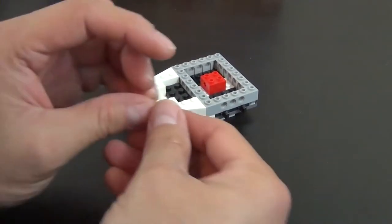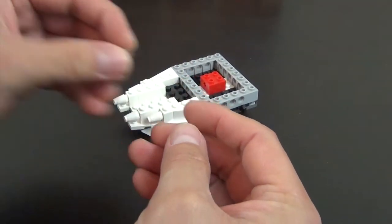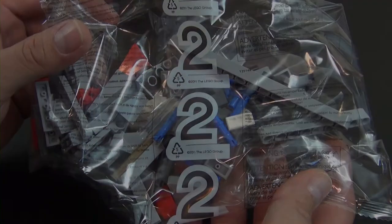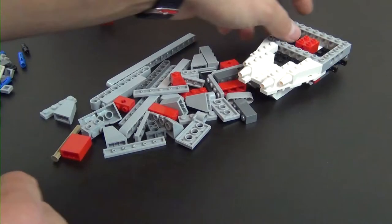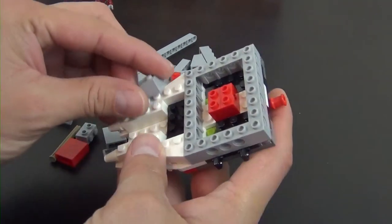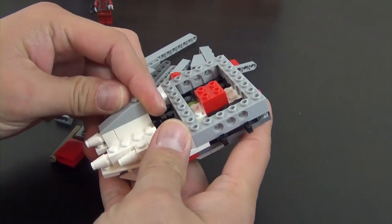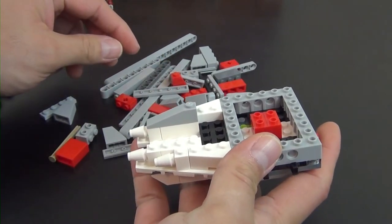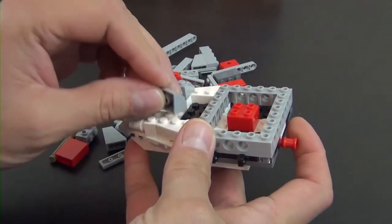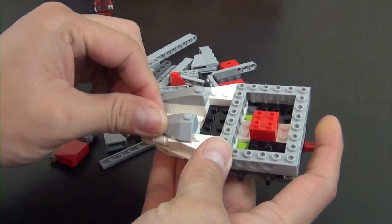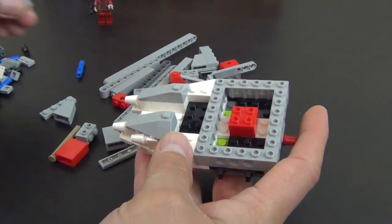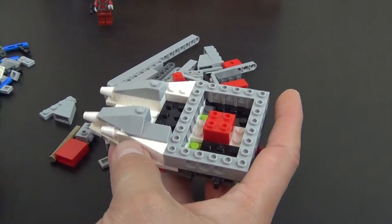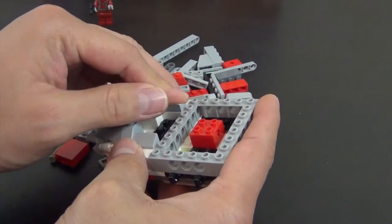Two more inverted slopes. Two one by three bricks. That completes bag number one. We do have one extra piece, a clear one by one plate. Let's go ahead and move on to bag number two. We're going to continue on with this piece. We have a couple of these wedge sloped bricks there and right there, and then two cheese slopes.